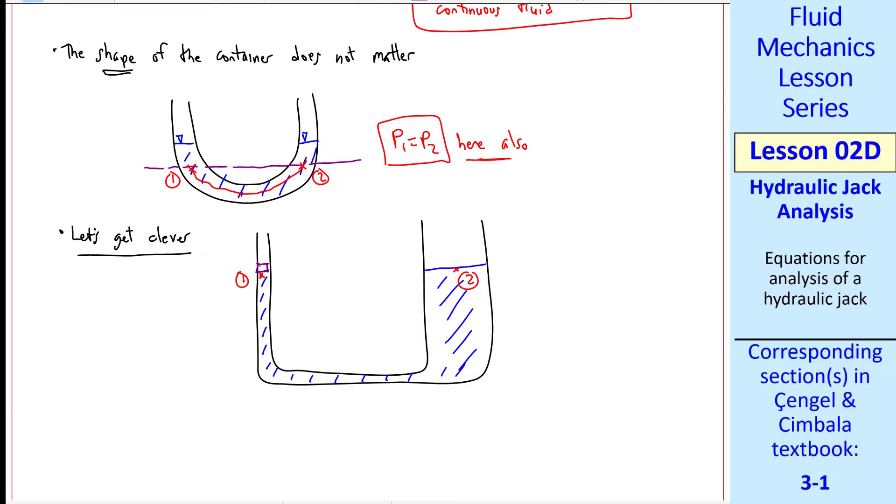Now, instead of being exposed to atmospheric pressure, let's add pistons at the surfaces of each leg. Let piston 1 have surface A1, and let piston 2 have surface A2. This is the surface area exposed to the liquid, or in contact with the liquid.